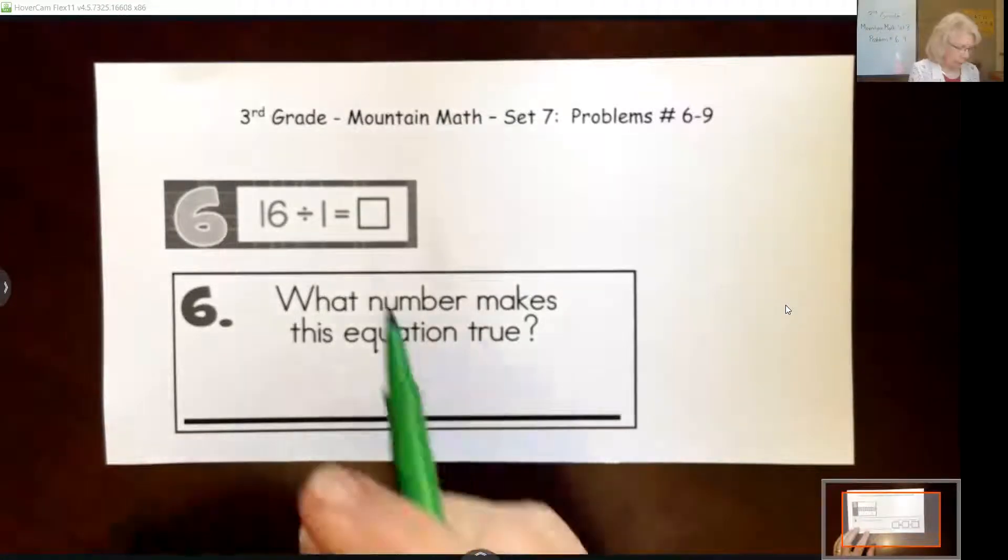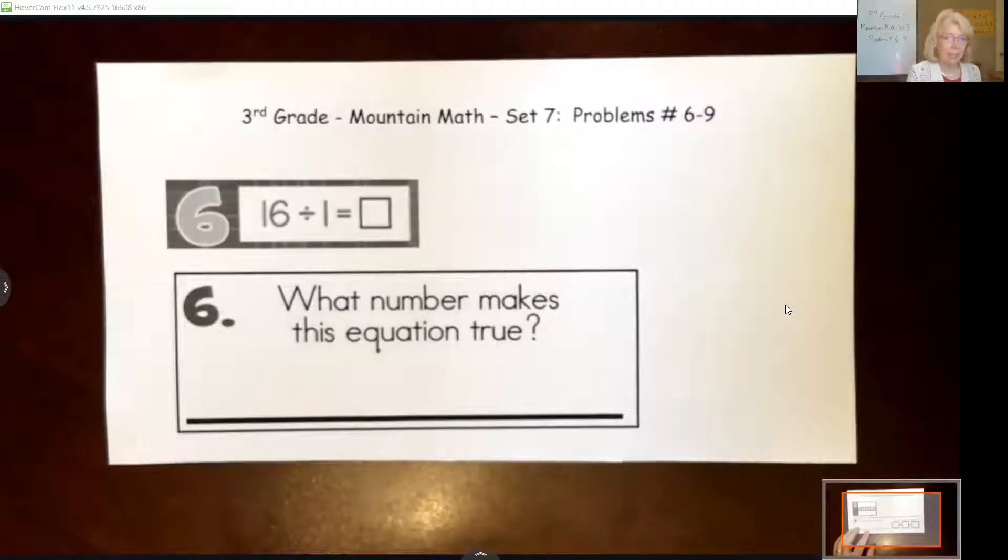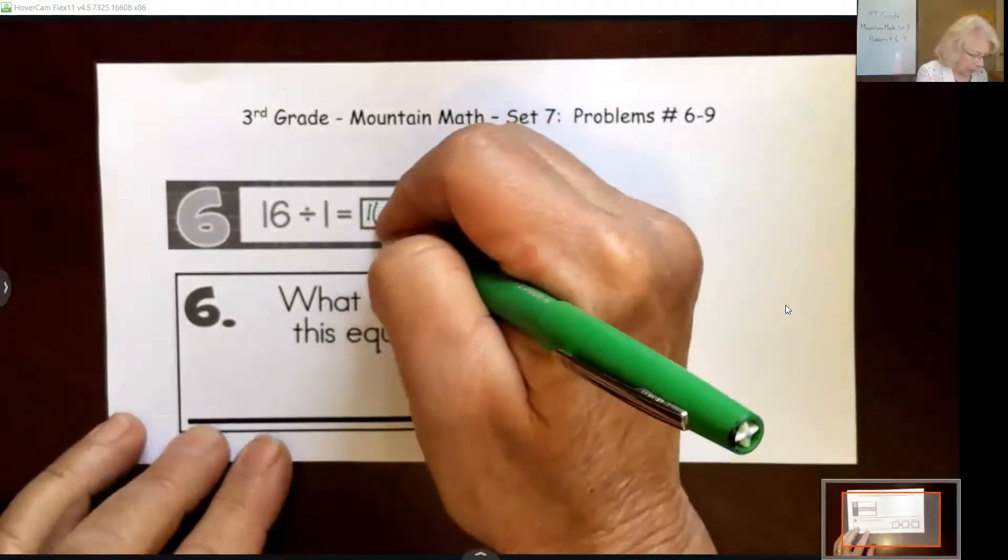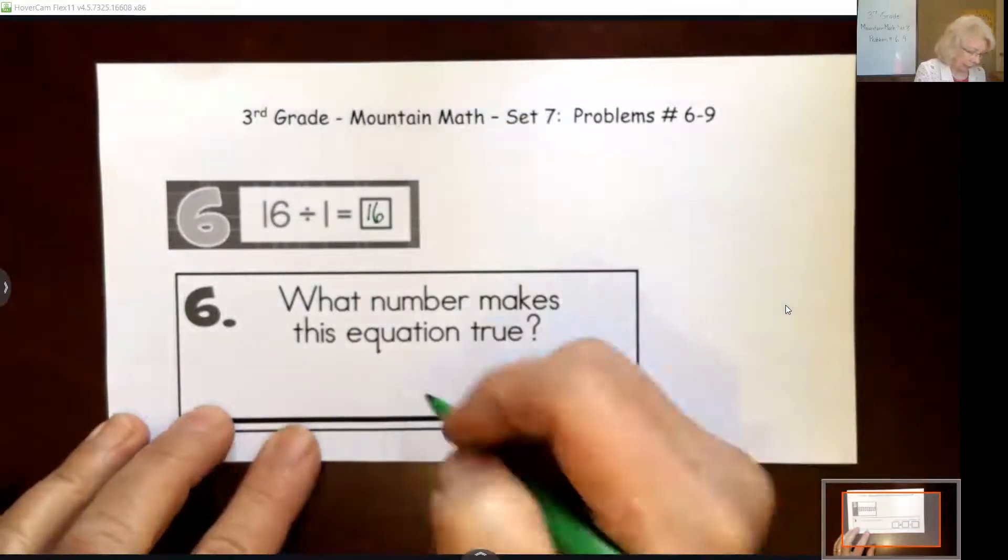16 divided by 1. Well, any number divided by 1 is itself. So the answer is 16.